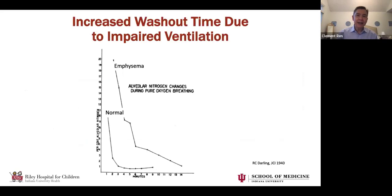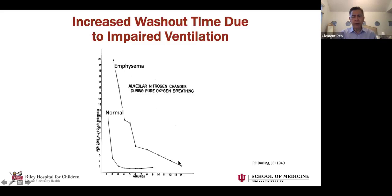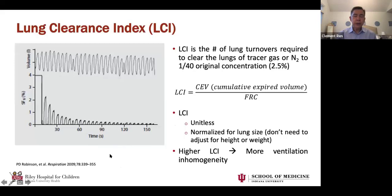The idea that MBW could reflect abnormalities in lung function is not new. It was described back in 1940 in the Journal of Clinical Investigation, where investigators compared nitrogen emptying in emphysema versus normal. The horizontal axis was in minutes, and it took much longer for the patient with emphysema to empty the nitrogen in his lungs — because of ventilation defects and poor gas mixing. So washout could be used to assess how well the lungs are being ventilated.